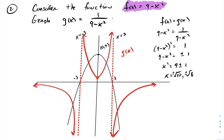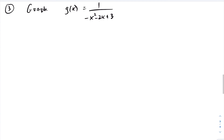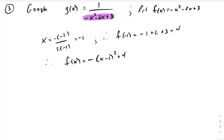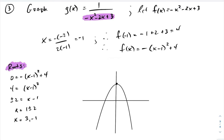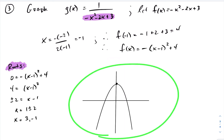In the final example, we want to graph the reciprocal of another function. First, express the bottom function in quadratic form by finding the vertex. We get a vertex at negative 1 and 4, so f(x) expressed in vertex form is as shown. We'll first graph f(x), producing a quick sketch.